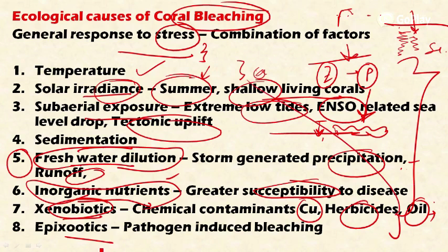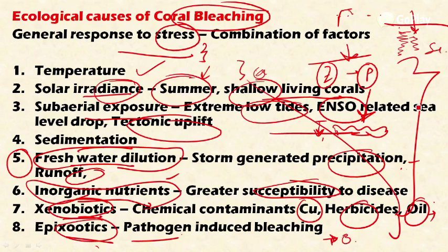The eighth reason is epizootics: certain disease-causing organisms, that is pathogens, cause diseases directly to the coral polyps — not just the zooxanthellae. This leads to the direct death of the tiny coral polyp animals that inhabit the coral reefs, and thereby also results in the death of the zooxanthellae.